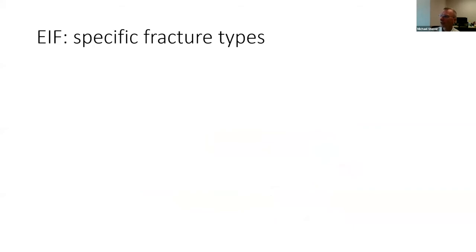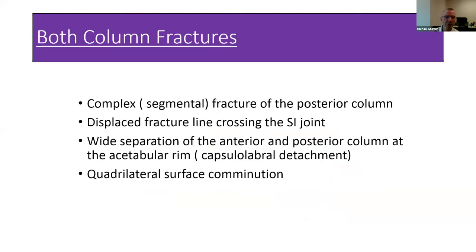Looking at specific fracture types and indications: in both-column fractures, indications for the extended iliofemoral include a complex or segmental fracture of the posterior column. Displaced fracture lines that cross the sacroiliac joint are also an important fracture pattern for this approach—it is probably the best way to achieve anatomic reduction of each fragment.